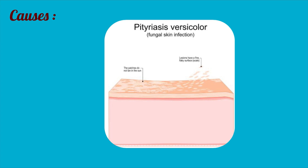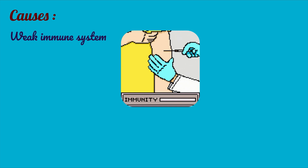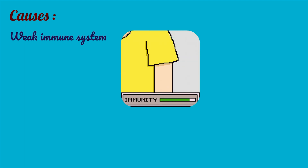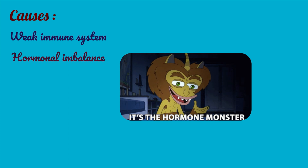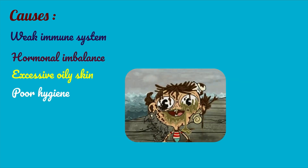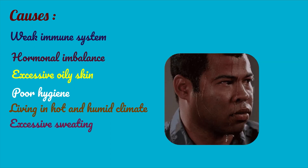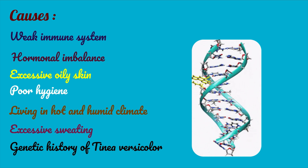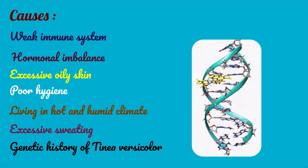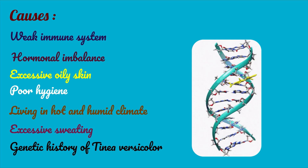Tinea versicolor is caused by a superficial infection of the skin — the below layers are not infected. Only the superficial layer of the skin, that is the stratum corneum, is infected. The possible causes include weak immune system, hormonal imbalance, excessive oily skin, poor hygiene, living in hot and humid climates, excessive sweating, and a family or genetic history of Tinea versicolor.